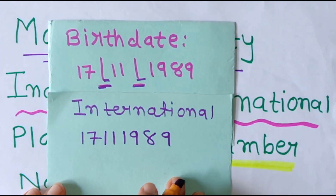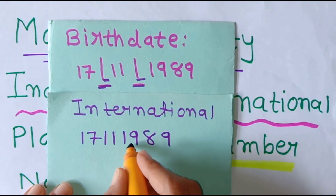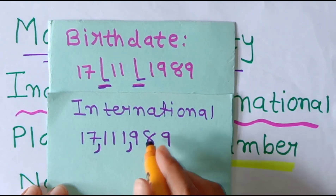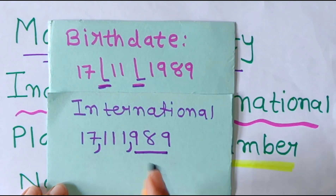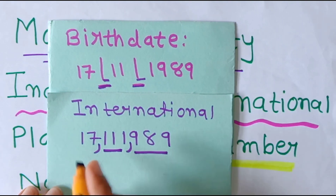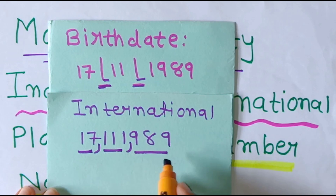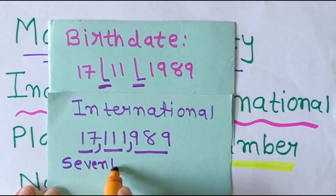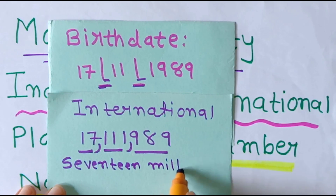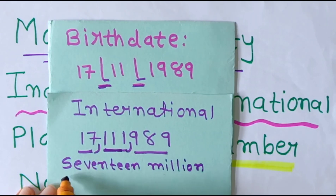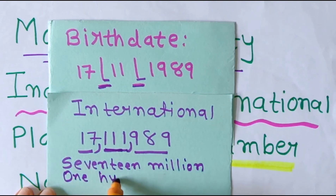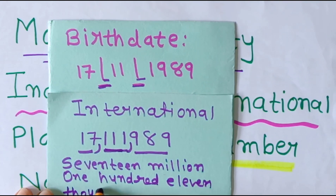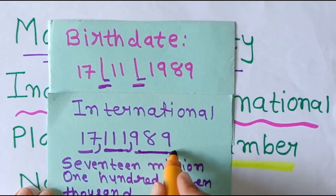This time we write the number as per the international system of numeration. We know that as per the international system, we have to insert a comma after every three digits. This portion is called 100, this is 1000, and this is Million. So the number name is: 17 Million, 111 Thousand, 989.